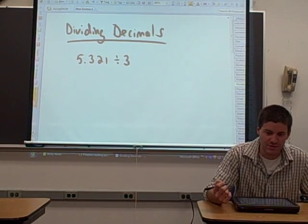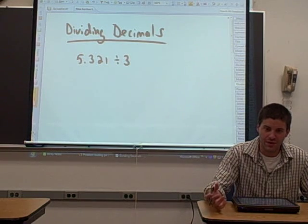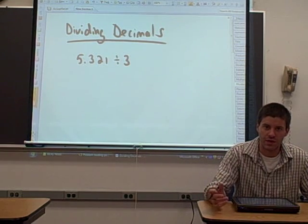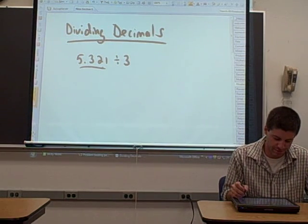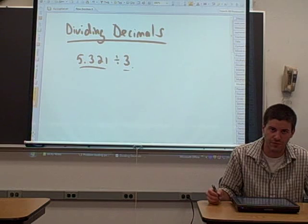Alright, now let's divide some decimals. So let's start by dividing a decimal by a whole number. Let's take this example. Let's divide this decimal 5.321 by the whole number 3.